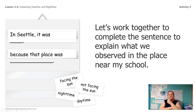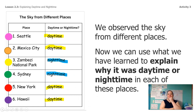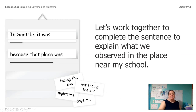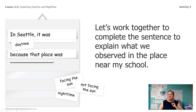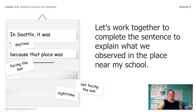So we have: in Seattle, it was — was it daytime or nighttime in Seattle in our chart? Let's go back and look. In Seattle, it was daytime. And why? Because that place was facing the sun or not facing the sun? It was facing the sun. So let's read it all together: in Seattle, it was daytime because that place was facing the sun.